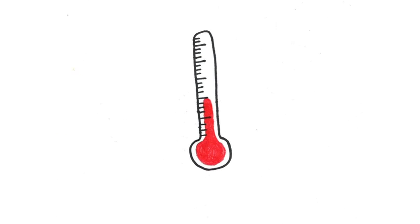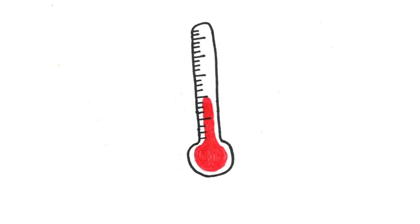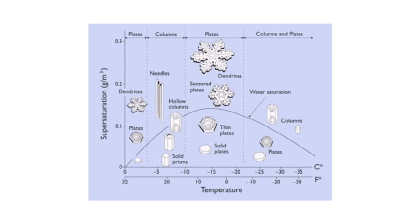Temperature has the dominant effect when it comes to what general shape the snowflakes will form into. This chart shows some of the shapes a snowflake is likely to form into at different temperature brackets.